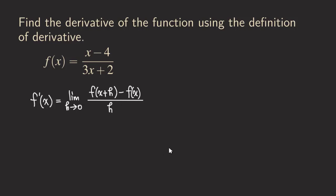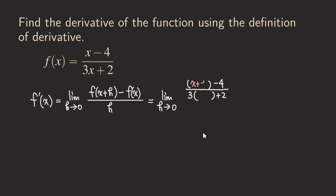Filling in the information, we are going to get the limit as h approaching zero. We copy down this function turning all the x's into a blank — so we get blank minus four over three blank plus two. We fill x plus h inside the blanks. And we also need to subtract f of x, so we subtract the original function: x minus four over three x plus two. The denominator is still just h, so we leave it for now.